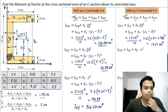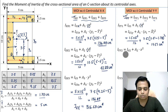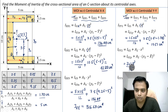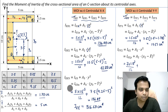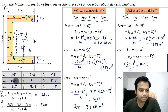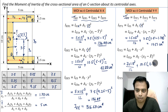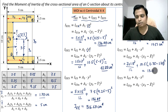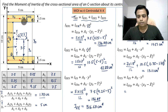For rectangle 2 about Y-Y: (7 × 1.5³)/12 + 10.5 × (x2 − x̄)². With x2 = 0.75 and x̄ = 1.78, we get (0.75 − 1.78)². The final value is Iyy2 = 13.11 cm⁴.